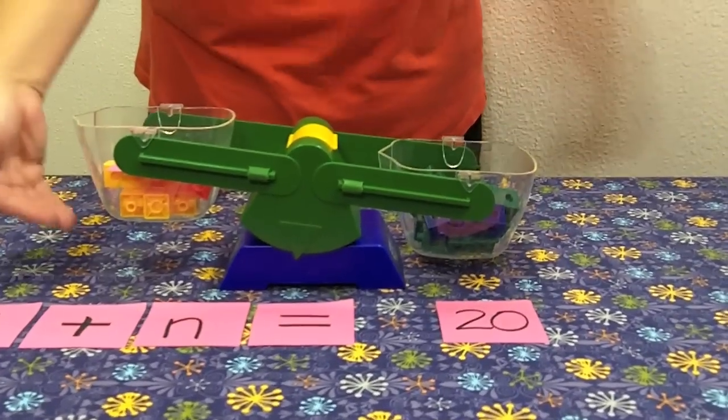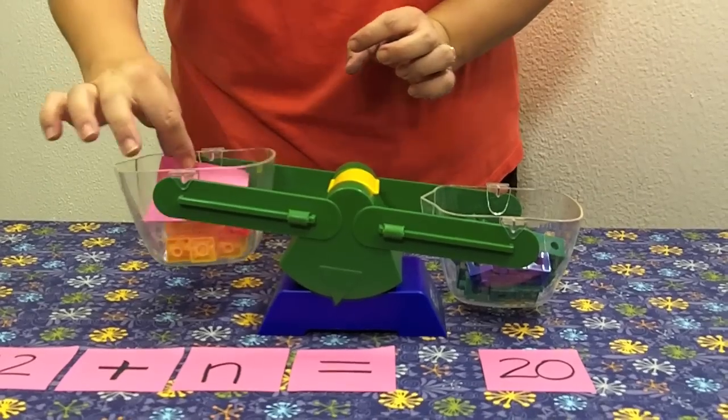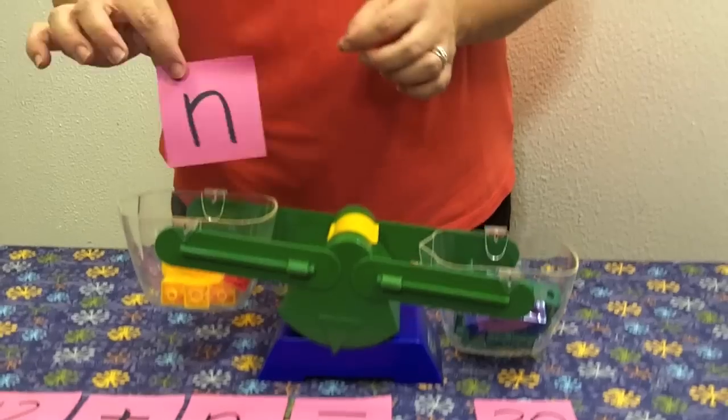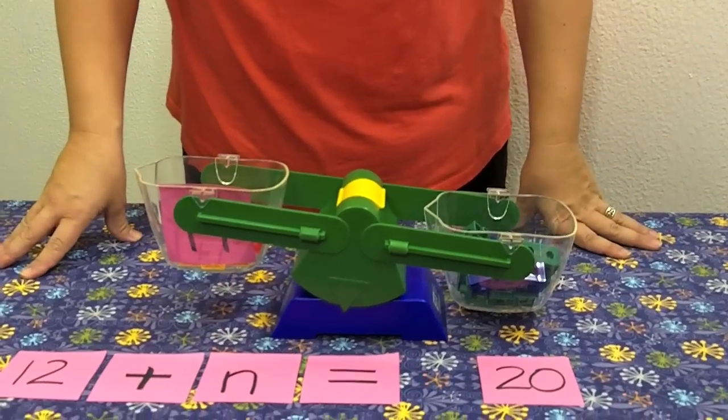Alright, now we can see this is not balanced because we don't know what n equals. In order to figure out what n equals, we need to get n all by itself. So we're going to use something called the subtraction property of equality.